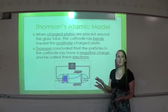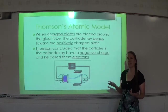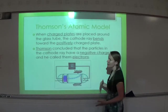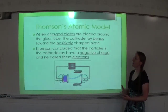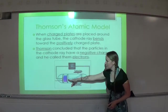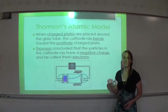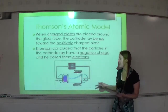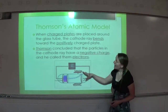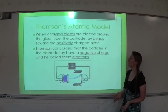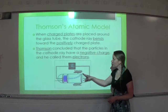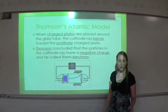Thomson was wondering what the cathode ray was made of. He put a positive and negative plate on either side of the beam, and when he turned the beam on, he found that it traveled towards the positive plate — it bent toward the positive instead of going in a straight line. Since opposites attract, a negative charge would be attracted to a positive plate. Thomson concluded that the particles in the cathode ray had a negative charge and he called them electrons.